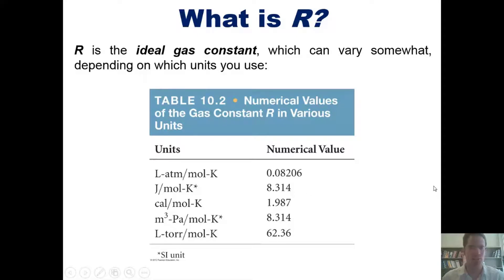The most commonly used ideal gas constants are the first two listed in this table. I ended up using the first one so much in high school chemistry that to this day I still have it memorized.